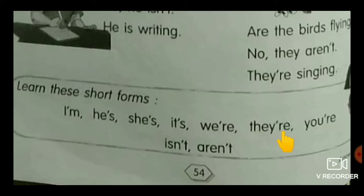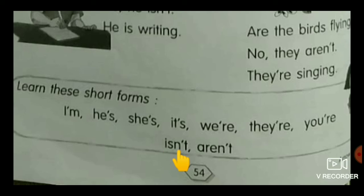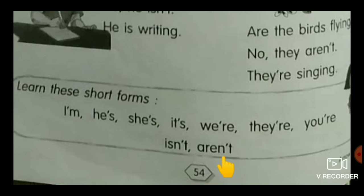They're and You're are plural pronouns. Isn't — in the place of O, replace with apostrophe. Aren't — in the place of O, replace with apostrophe. These are all short forms, children.